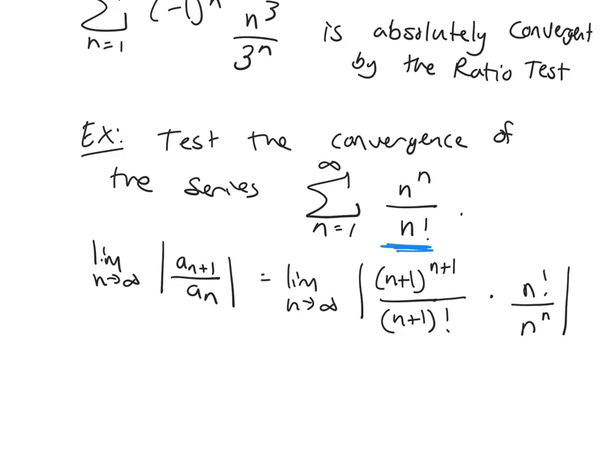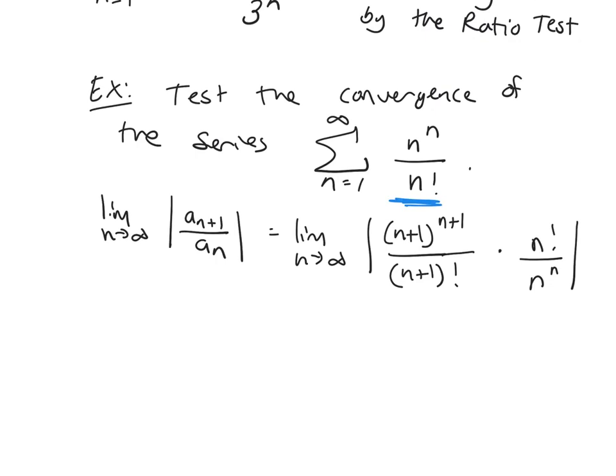Now every one of these objects here, this n factorial, n plus 1 factorial, n to the n, n plus 1 to the n plus 1, those are all positive. So we can immediately drop the absolute value because I don't have anything that's negative here. And I'm going to organize my terms and group the like things together.